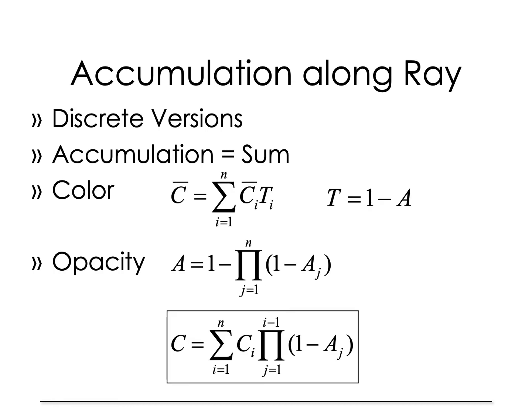For practical purposes, we do look at discrete versions where the integral is approximated using a discrete sum. The color is now C bar equals the summation of C sub i T sub i. Note that T transmittivity is 1 minus the opacity. The opacity at every point depends on the previous sample points. This is crucial.